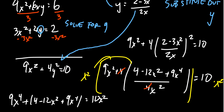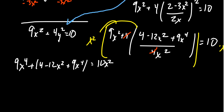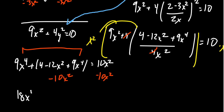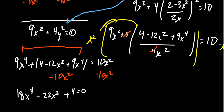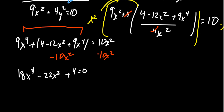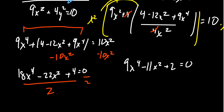This is a polynomial equation, so we want to set the right-hand side equal to zero and factor. Subtracting 10x² from both sides and combining like terms, we get 18x⁴ minus 22x² plus 4 equals 0. Dividing both sides by 2 gives 9x⁴ minus 11x² plus 2 equals 0.